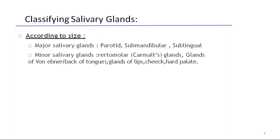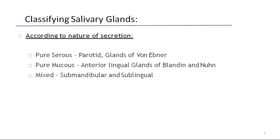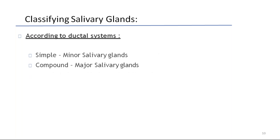Minor salivary glands are the retromolar or Carmalt's glands, glands of Weber, and epithelial glands. To remember the minor salivary glands, just remember: parotid is pure serous; pure mucous are the anterior lingual glands of Blandin and Nuhn; mixed are submandibular and sublingual. According to ductal systems, simple ductal systems are minor salivary glands, and compound or major salivary glands have more branches.